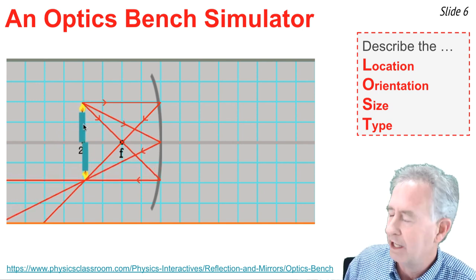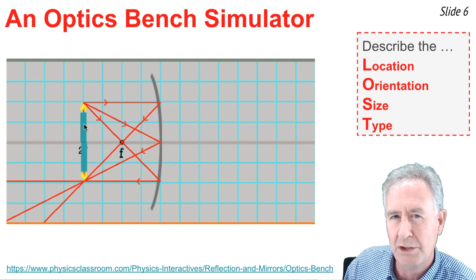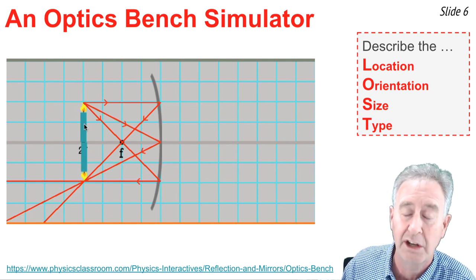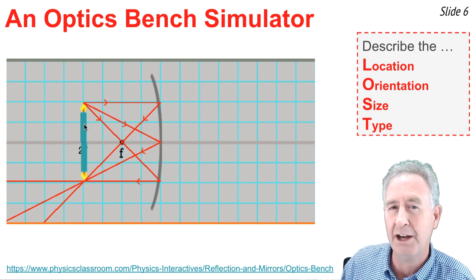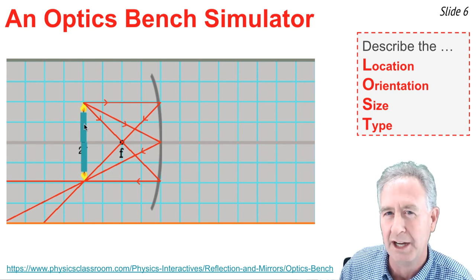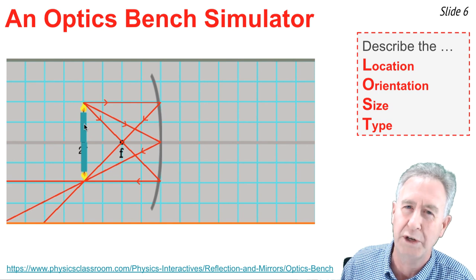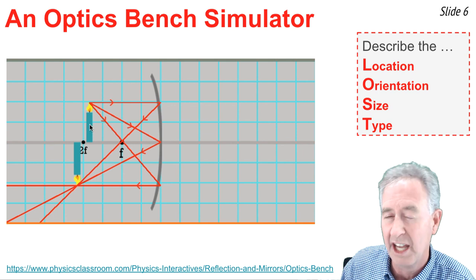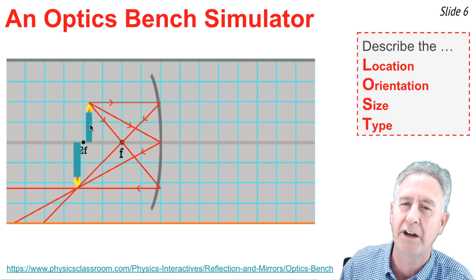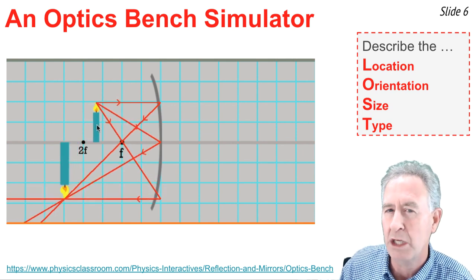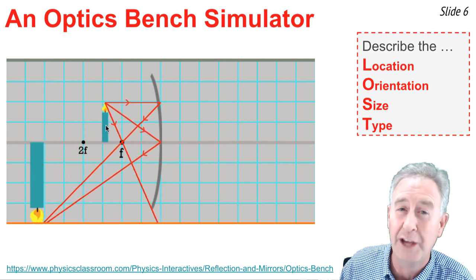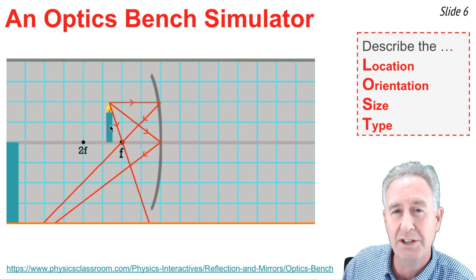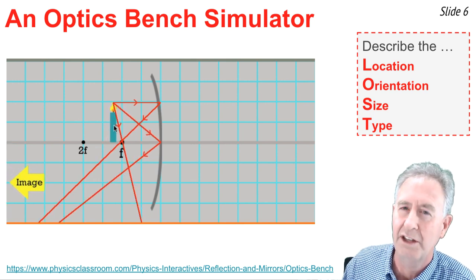When I finally get the object to the center of curvature, the image is also located at the center of curvature — still inverted, but now the same size as the object, and also real. Once the object gets inside of the center of curvature, less than two focal lengths from the mirror, the image is beyond the 2F point. The image is now magnified in size, still inverted, and still real.